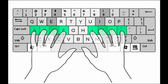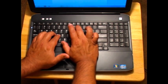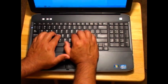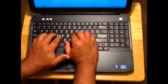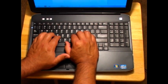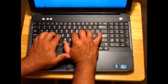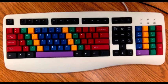Ready, set, go. We will start by pressing K, then I, 8, I, K, comma, K. Now reposition your hands back to the home keys and press the space bar with your right thumb. Now continue with your left hand and press D, E, 3, E, D, C, D. Reposition your fingers above the home keys and press the space bar with your right thumb.